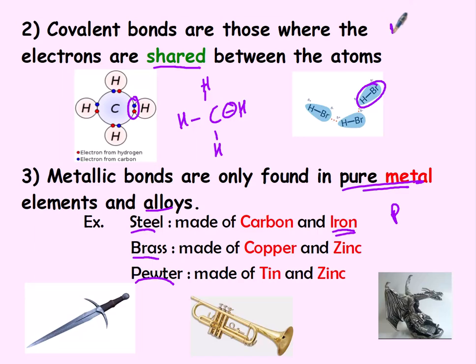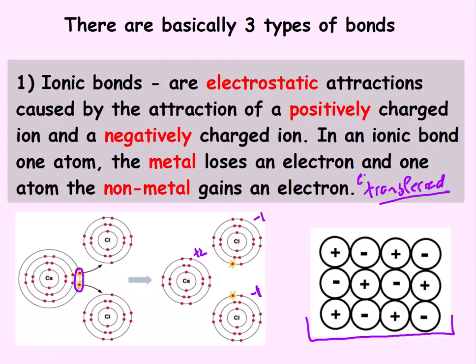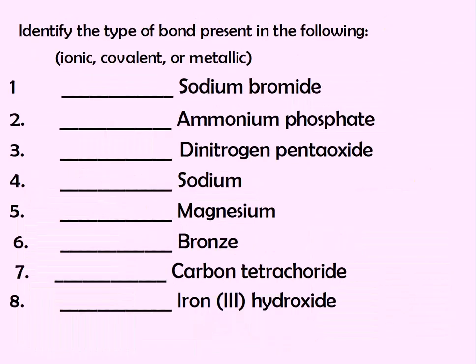Covalent bonds are going to be non-metals — those were the ones we named using prefixes. And ionic is going to be between a metal and a non-metal, or a metal and a polyatomic ion. Go ahead and pause the video and figure out if these are ionic, covalent, or metallic. Restart when you have your answers.